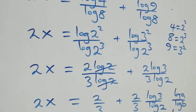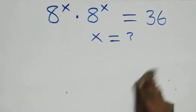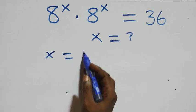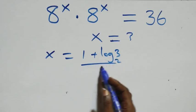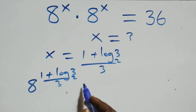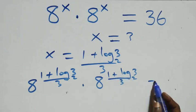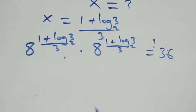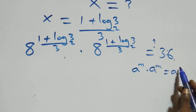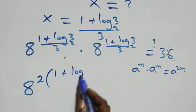Now let's verify this satisfies the original problem by substituting x equals (1 plus log 3 base 2) over 3. We substitute both instances of x. Using the rule that a^m times a^m equals a^(2m), we can write 8 raised to power 2 times (1 plus log 3 base 2) over 3, equals 36.